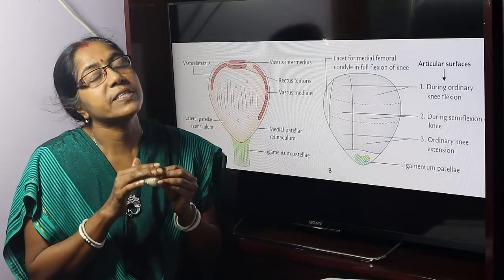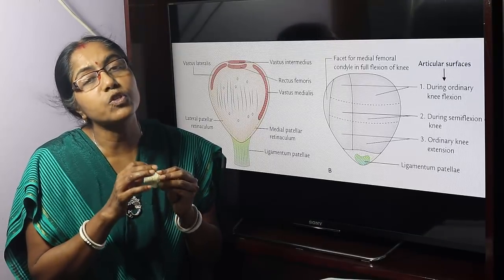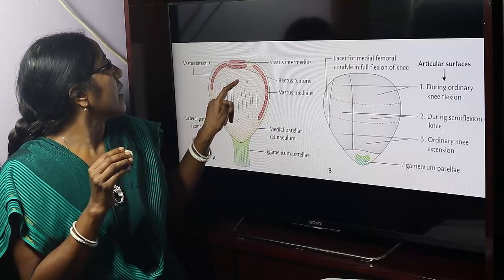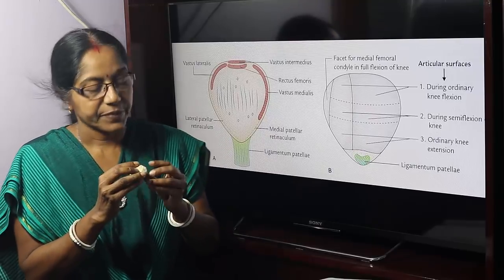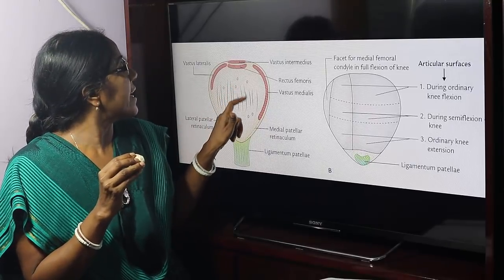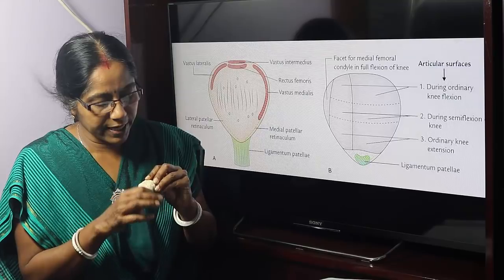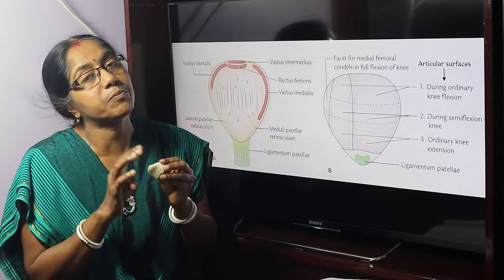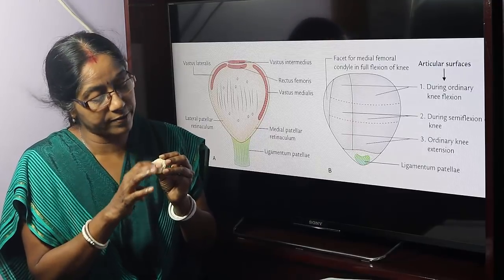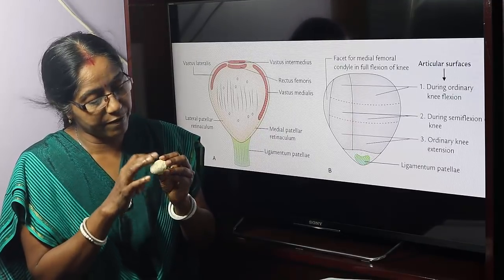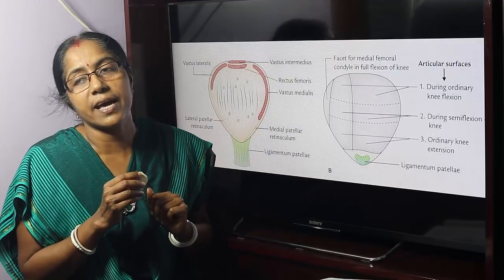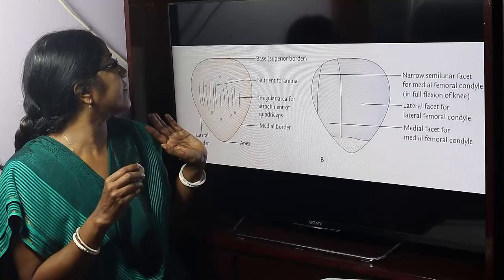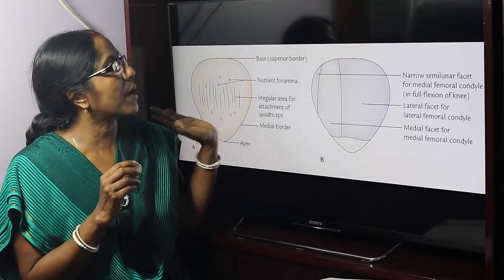The anterior surface is rough, convex, and shows numerous vascular foramina — these are the nutrient foramina. The anterior surface is subcutaneous. This surface shows irregular areas for attachment of the quadriceps femoris, including its aponeurotic fibers.